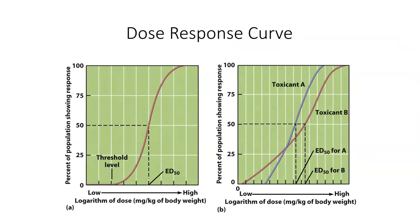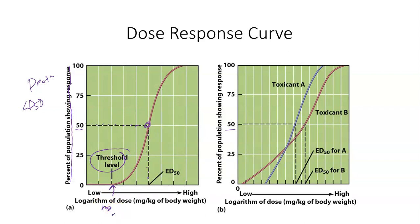Last but not least, we've looked at dose-response curves before, but let's take one last look. Some important things we want to be able to do is identify either the ED50 or LD50 level. We find that by looking at the percent of the population showing the response — if the response was death, that would be the LD50; otherwise, we call it the ED50 level. All we do is look for that 50% line, track it over to where it intersects our data curve, and then from the x-axis we can identify that ED50 or LD50 dosage. The threshold level refers to the maximum level at which there is no effect at all. That is it — I will see you guys in class.